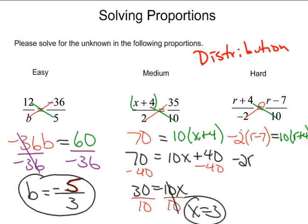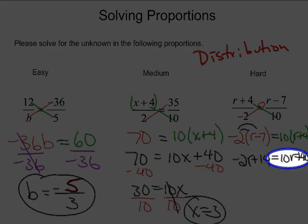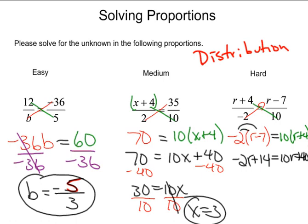Now by distributing: negative 2r, then negative times negative is positive, gives us plus 14, equals 10r plus 40. After distributing, we need to collect like terms — there are no like terms on the left, and there are no like terms to be collected on the right. But we do see that the variable r appears twice. So we'll get rid of the negative 2r by using the inverse and applying that to both sides. Negative 2r plus 2r cancels; bring down the 14. 10r plus 2r is 12r; bring down the plus 40.